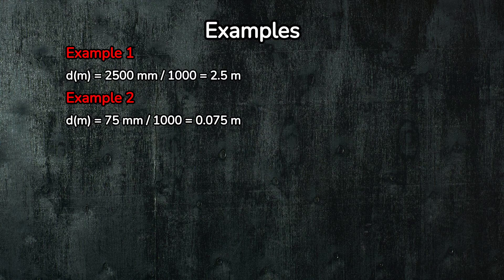Simple, right? Now let's try another one. Example two, convert seventy-five millimeters to meters. Again, we divide by one thousand. So, seventy-five millimeters is equal to zero point zero seven five meters.